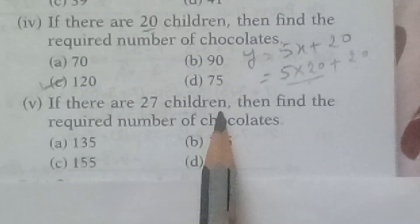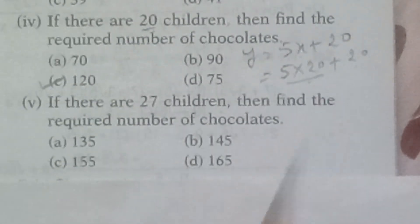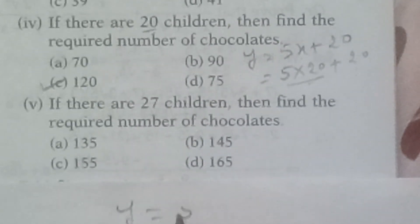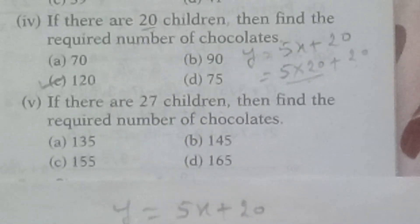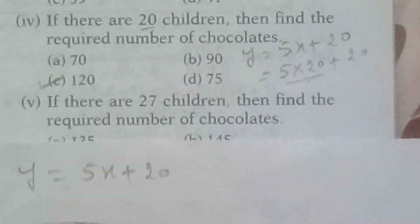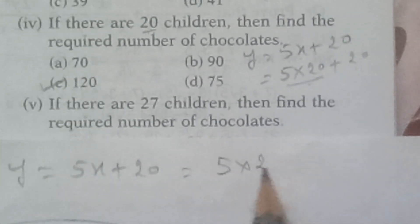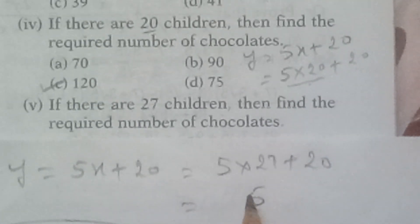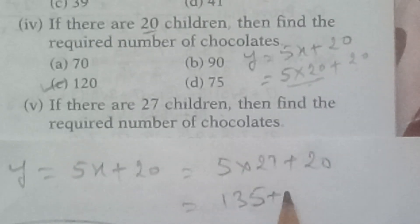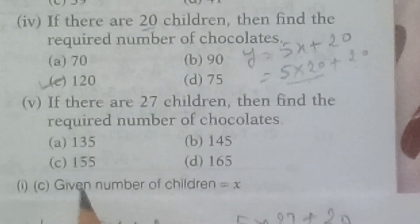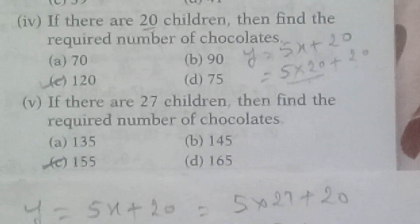Last question: if there are 27 children, find the number of chocolates required. Using Y equals 5X plus 20, we put X equals 27: Y equals 5 into 27 plus 20. 5 times 27 is 135, plus 20 equals 155. So the number of chocolates required is 155. These are all the answers.